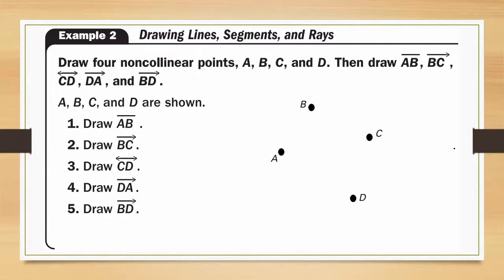Example two, drawing line segments and rays. We have to draw four non-collinear points A, B, C, and D and then draw line segment AB, ray BC, line CD, ray DA, and ray BD. So they've already drawn A, B, C, D for us and from that we're going to first do the line segment AB.